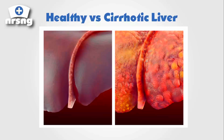So this would be kind of a close-up of a healthy liver — the different lobes here — and this would be a close-up of a cirrhotic liver. You can see all this scar tissue has developed, and clearly with that much scar tissue going on with the liver, we're going to have decreased functioning.